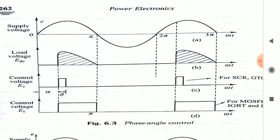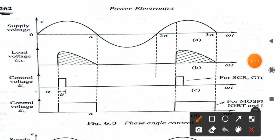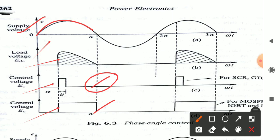The first control technique is phase angle control, also called firing angle control. By varying the firing angle of a thyristor, we control the output voltage. SCR, GTO, MOSFET, and IGBT can all be used, but SCR has more advantages compared to MOSFET and IGBT, which is why SCR is preferred.